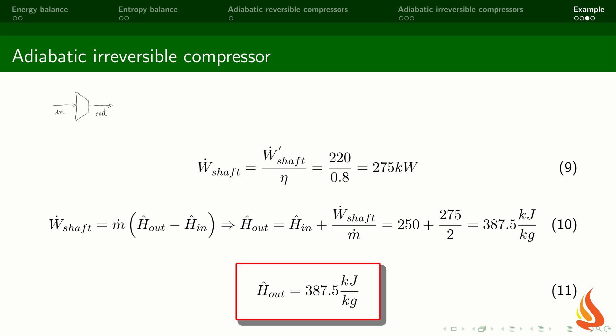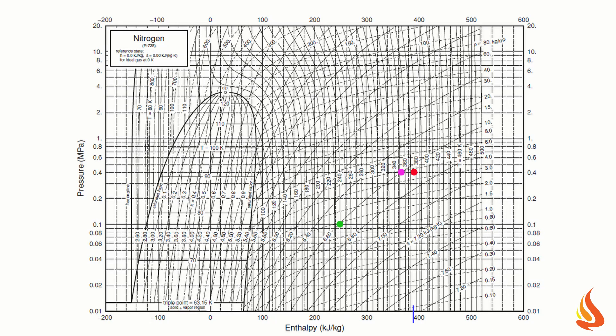Next, we use the energy balance. We know the compressor power, the mass flow rate, and the specific enthalpy of the input stream. The only thing left is to calculate the specific enthalpy of the output stream — it is equal to 388 kJ per kilogram. We head back to the pressure-enthalpy diagram and find the location that has this specific enthalpy at the pressure of 0.4 MPa.